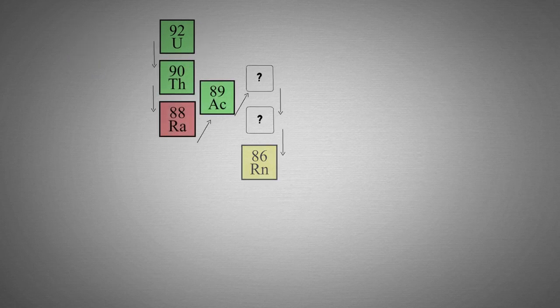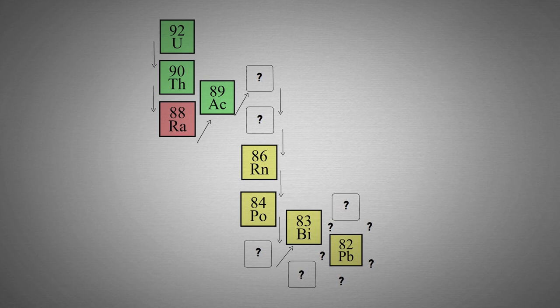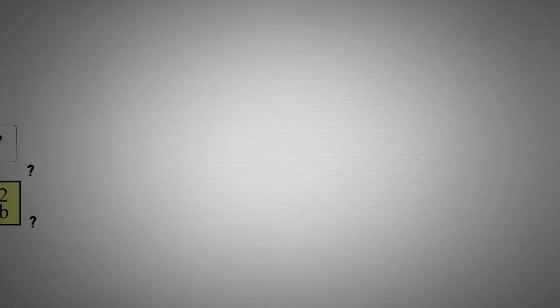As he worked through all the steps the decay chain must take to reach lead, he discovered that there must be something like 40 different kinds of atoms between lead and uranium. But as any glance at the periodic table will tell you, just as it told him then, there are only 10 elements between lead and uranium.